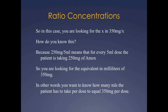How do you know this? Well because 250 milligrams per 5ml means that for every 5ml dose the patient is taking 250 milligrams of Amoxicillin. So you are looking for the equivalent in milliliters of 350 milligrams. In other words, you want to know how many ml the patient has to take per dose to equal 350 milligrams per dose.